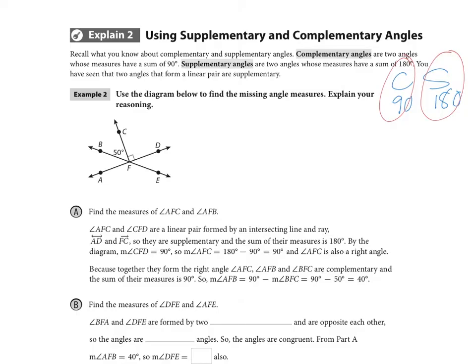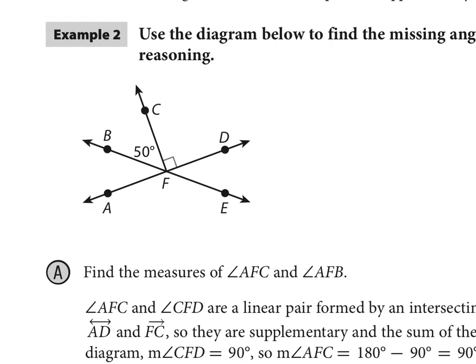In example 2, in this diagram we have line BE intersecting line AD and we have another ray coming out at their intersection point F which is creating a 90 degree angle here and a 50 degree angle on the other side. That's our given information. We're being asked to find the measures of angle AFC and angle AFB. I'm going to zoom in on this picture a little bit. Because line AD has AFC and CFD forming a linear pair, they are supplementary angles and one of them is already 90, so that means AFC is also 90 degrees.